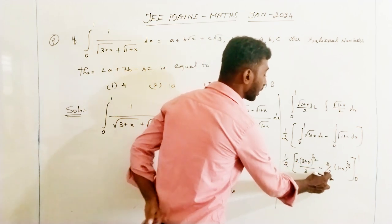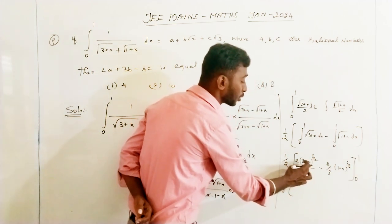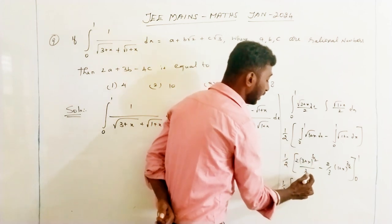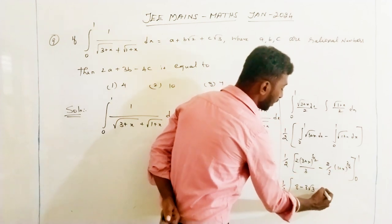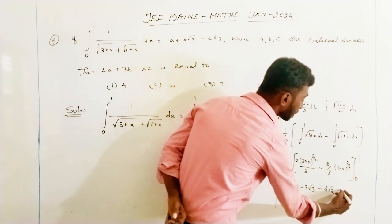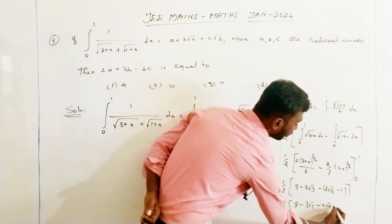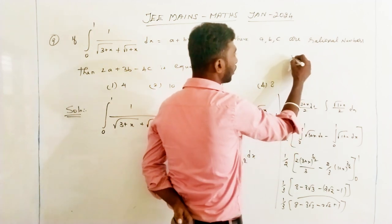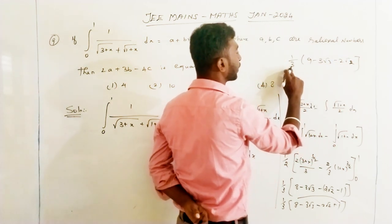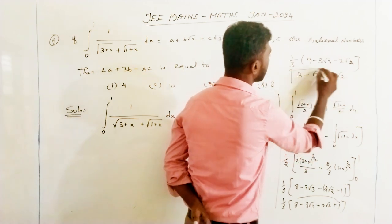Applying the limits, we get 1/3 times: upper limit x=1 gives (3+1)=4, and 4 to the power 3/2 is 8, minus lower limit x=0 gives 3 to the power 3/2 which is 3 root 3. Then minus: upper limit gives (1+1)=2, and 2 to the power 3/2 is 2 root 2, minus lower limit gives 1. So we have 1/3 times (8 minus 3 root 3 minus 2 root 2 plus 1), which gives 1/3 times 9 minus 3 root 3 minus 2 root 2, equaling 3 minus root 3 minus (2/3) root 2.